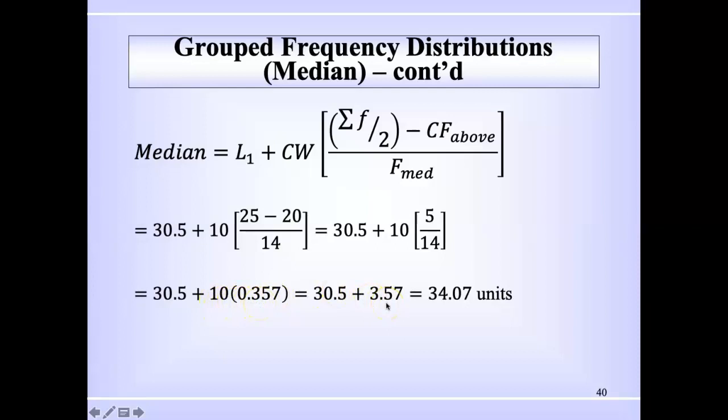And last but not least, we add the 30.5, which gives us 34.07 units. So we're saying our median score is 34.07 units. As usual, have fun with these calculations and we'll be speaking again soon.